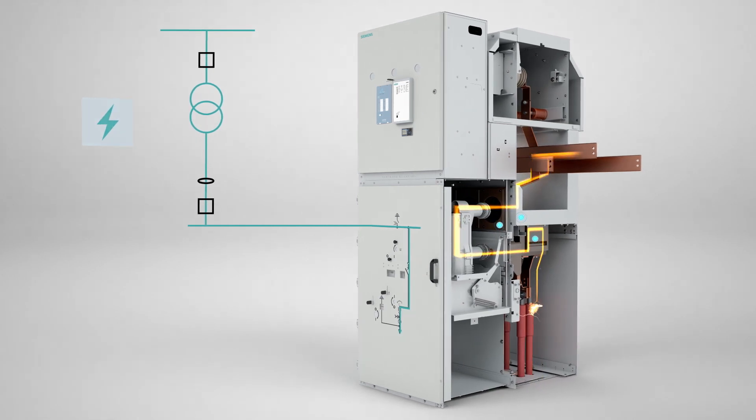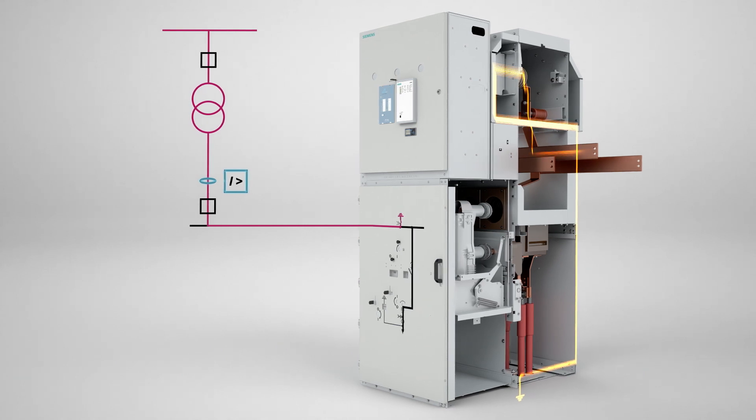Once an arc fault is detected, Sequench, at almost the same time, consciously closes the main current path of the switchgear to earth. This creates a three-phase low-impedance parallel path for fault current to flow, thus extinguishing the arc fault right away.